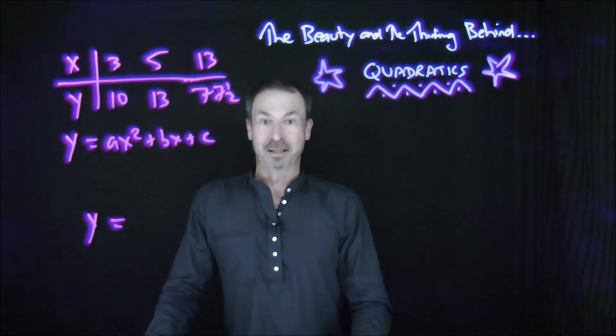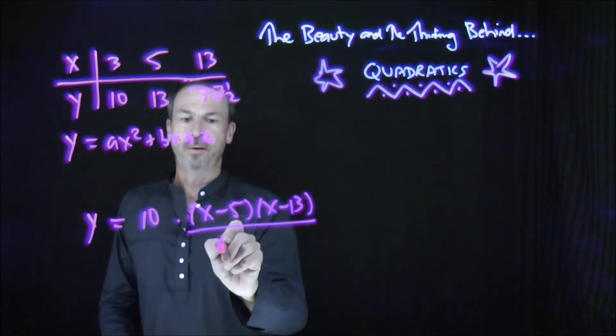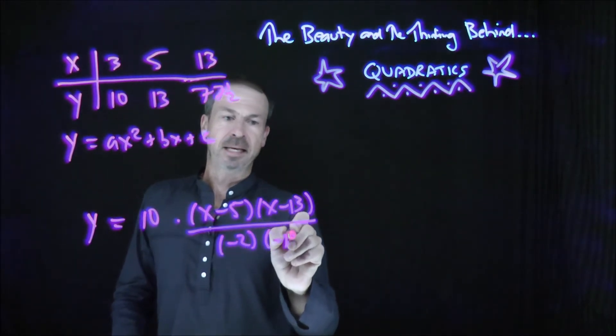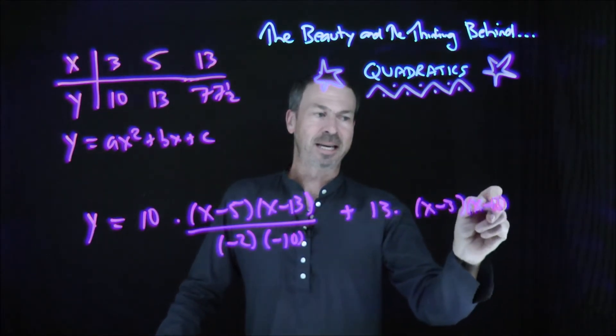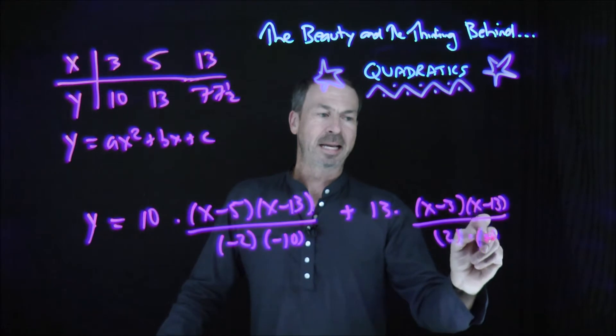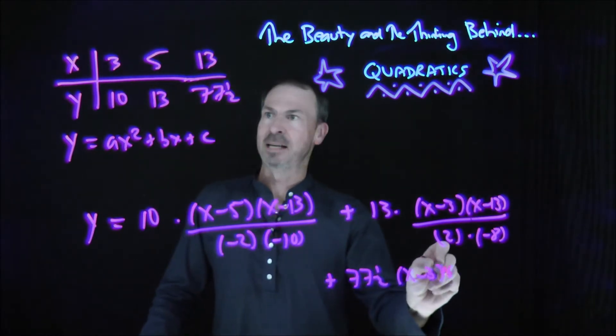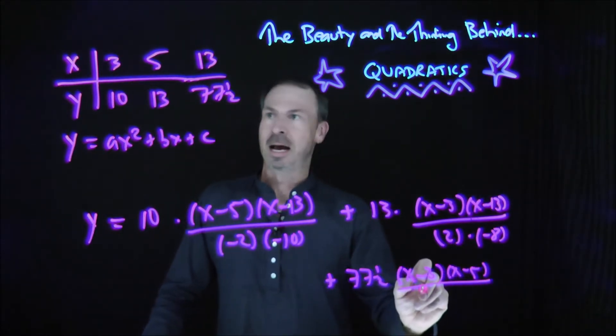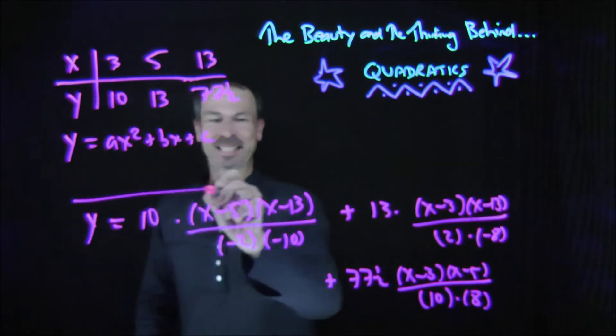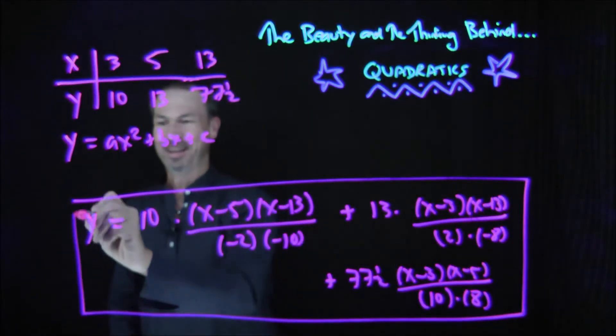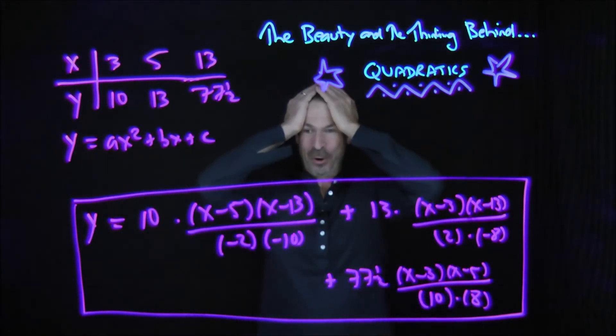I claim this does the trick. y equals 10 times (x minus 5) times (x minus 13), all over negative 2 times negative 10, plus 13 times (x minus 3) times (x minus 13), all over 2 times negative 8. I think I'm doing this correctly. Okay, plus 77 and a half times (x minus 3) times (x minus 5), all over 10 times 8. Bingo. That's it. That is my formula that fits that data. That looks insane. Whoa. Okay.